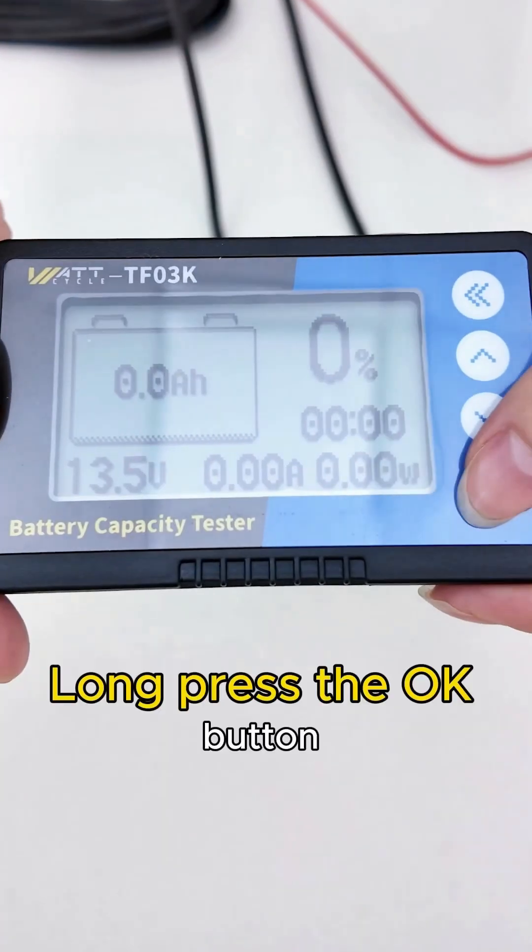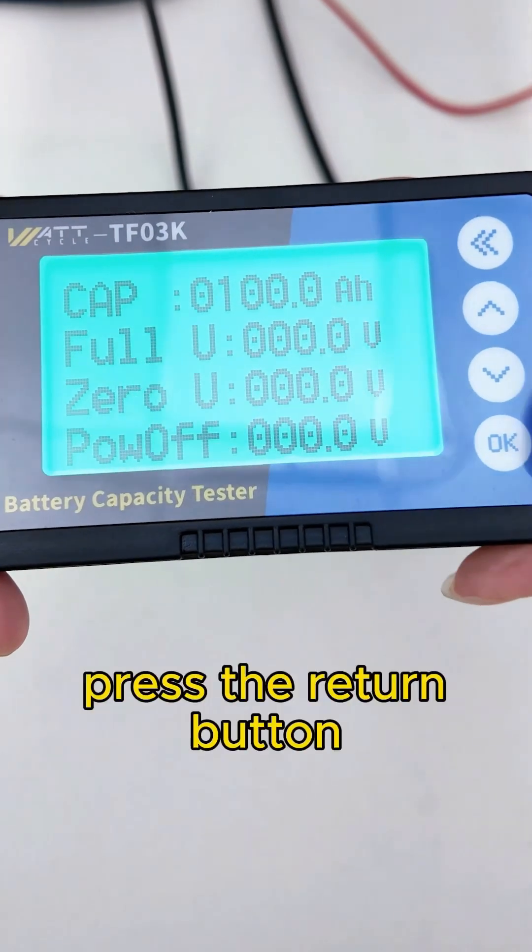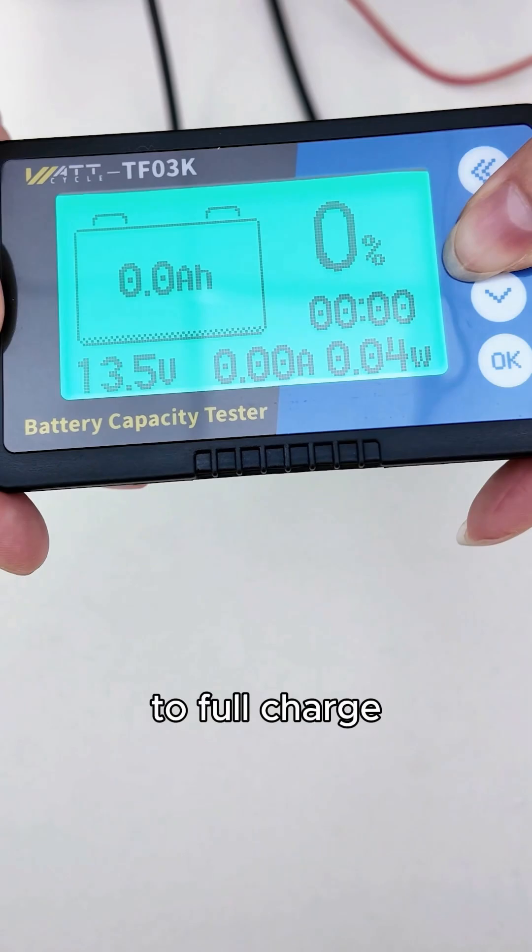Step 4: Display effect. Long press the OK button to set the battery capacity. After confirming, press the return button. Long press the UP button to set the battery to full charge.